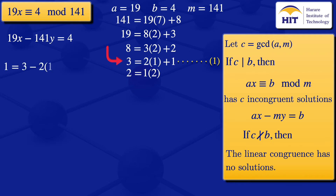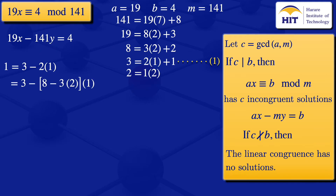From the Euclidean steps: 1 = 3 − 2 × 1. And 2 = 8 − 3 × 2, so substituting: 1 = 3 − (8 − 3 × 2) × 1 = 3 × 3 − 8 × 1.